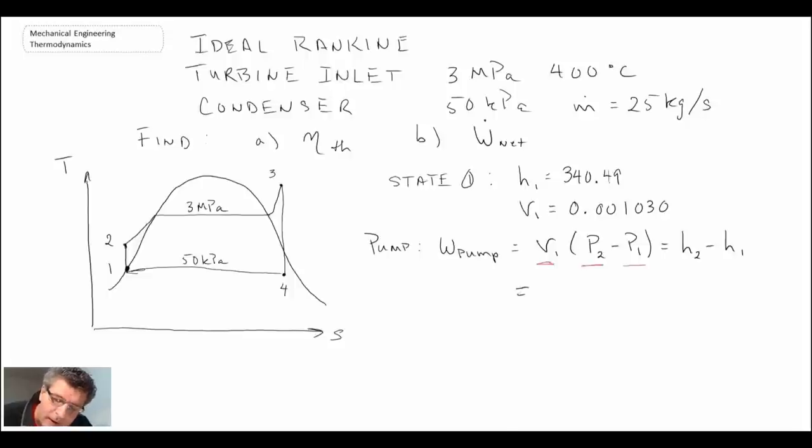We know p2 (the boiler pressure) and p1 (the condenser pressure), so we know everything in that equation. We also know h1, which enables us to get h2. When we calculate this, we find the value is 3.0385 kJ/kg. We can substitute back in and solve for h2 = 343.529 kJ/kg.